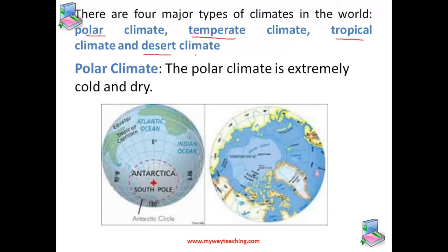So, there are four major types of climates: the polar climate, temperate climate, tropical climate, and the desert climate.